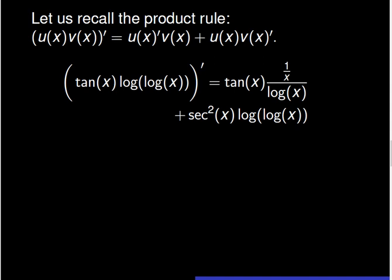Let us recall the product rule. The derivative of the product of two functions u of x times v of x is equal to u prime of x times v of x, plus u of x times v prime of x.